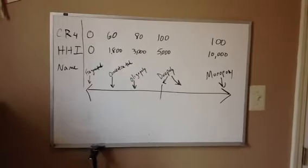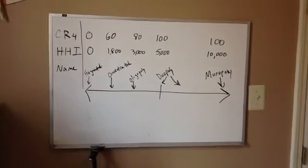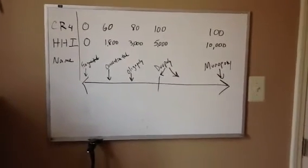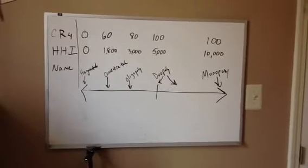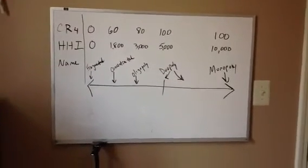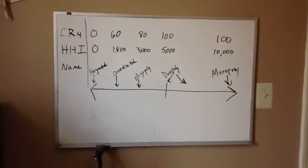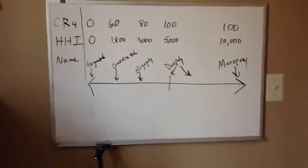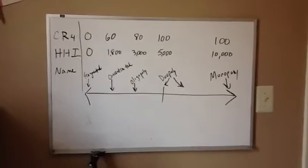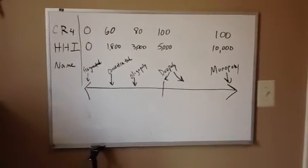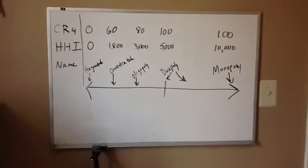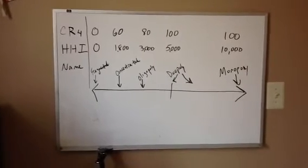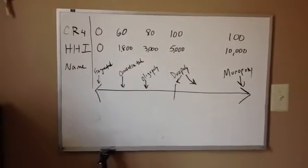We keep going to the right on the number line and we start to get to concentrated relatively soon on the number line, which is another thing that I've tried to bring up in class, which is don't think that this is an equal number line between zero and 10,000. We'll notice that between 5,000 and 10,000 almost nothing happens. At 10,000 all the way to the right we have a monopoly, which is the most concentrated an industry could be with one firm owning the entire industry.